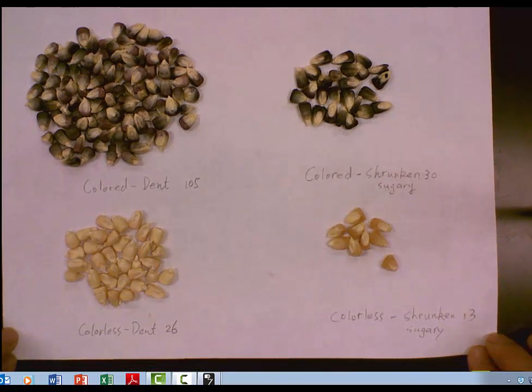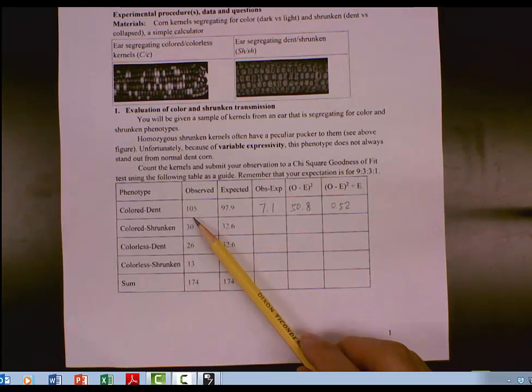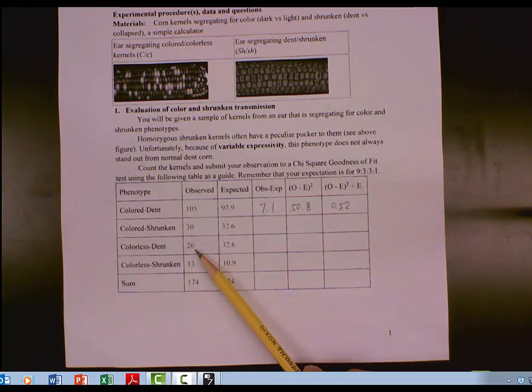Record those data into page one of lab one. That's those observed data, 105, 30, 26, 13. The total is 174 kernels.